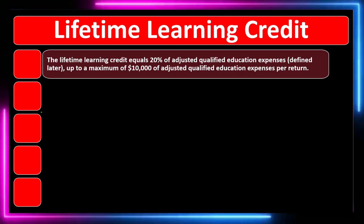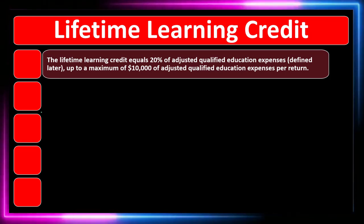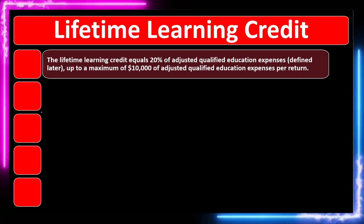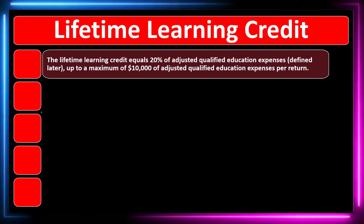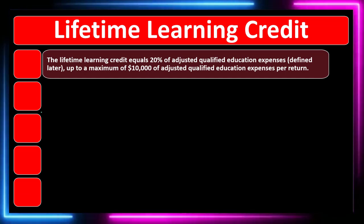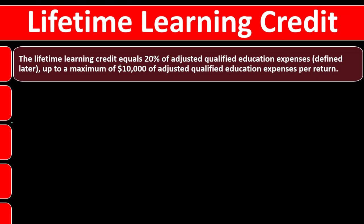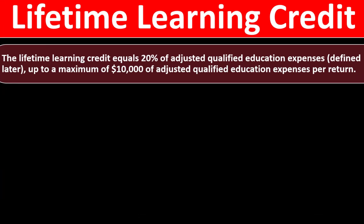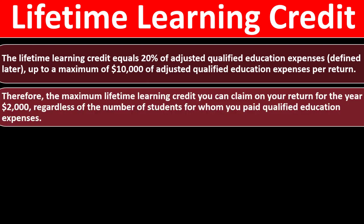The Lifetime Learning Credit has less restrictiveness but also less benefit. You'd first go for the American Opportunity Credit, and if you couldn't get it, you'd default to the Lifetime Learning Credit. The credit equals 20% of adjusted qualified education expenses, up to a maximum of $10,000 of adjusted qualified education expenses per return. To max it out, 20% of $10,000 equals a maximum credit of $2,000.